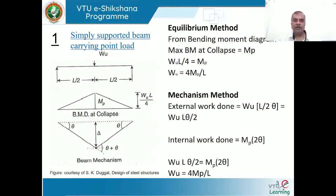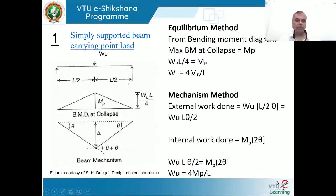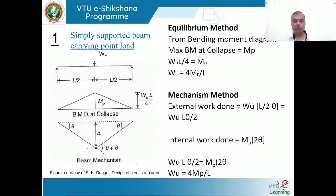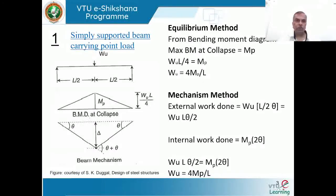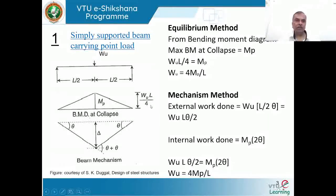For the simply supported beam of span L with load acting exactly at the center — L/2 from each support — the bending moment diagram is triangular. The maximum free bending moment is WL/4, and at collapse, when the load W reaches its ultimate value, WL/4 = mp, giving mp = WL/4 or W = 4mp/L.